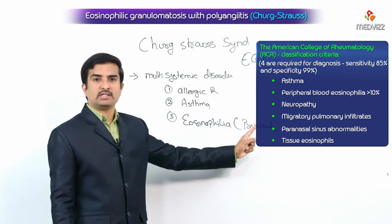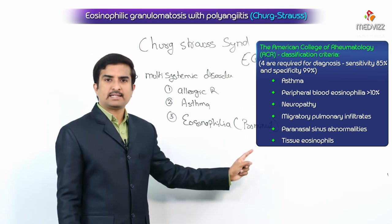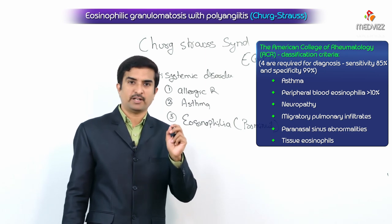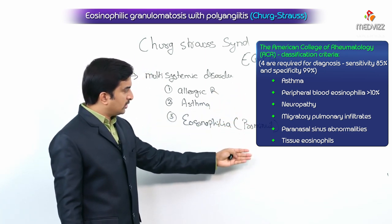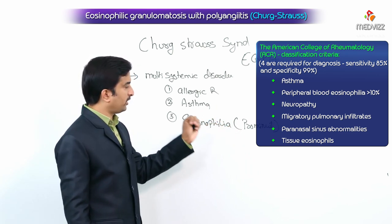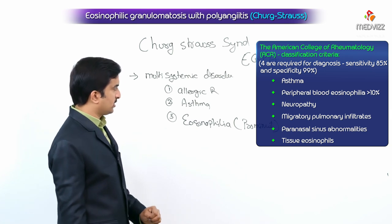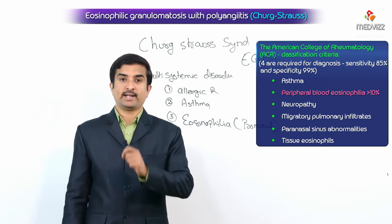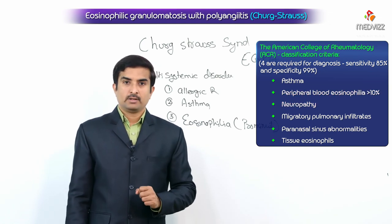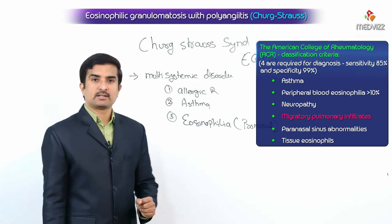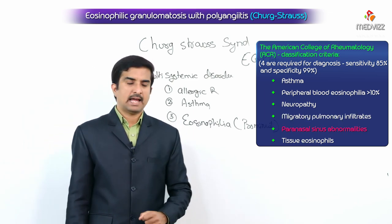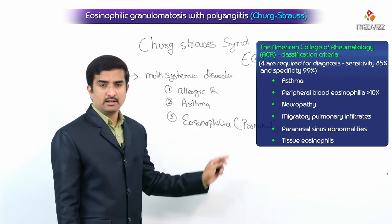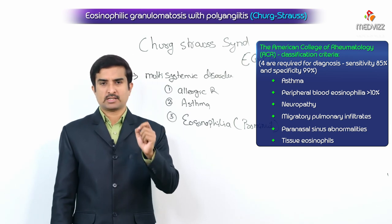The American College of Rheumatology classification criteria includes six findings, out of which any four are required for the diagnosis of Churg-Strauss. They are: first, asthma; second, peripheral blood eosinophilia greater than 10 percent; third, neuropathy; fourth, migratory pulmonary infiltrates; fifth, paranasal sinus abnormalities; and sixth, tissue eosinophils. If four of these six are seen, we can diagnose Churg-Strauss syndrome.